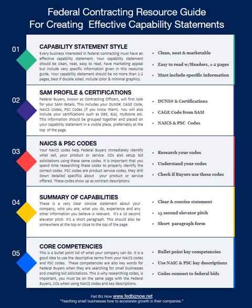Number four: you need to clearly document your capabilities for your company. It needs to be very short and sweet — it's like an elevator pitch. You might wonder how all of this information fits on one document, but I'm going to show you how. It's not going to be four pages; it'll be one or two pages. So you need to have that elevator pitch in a simple paragraph.